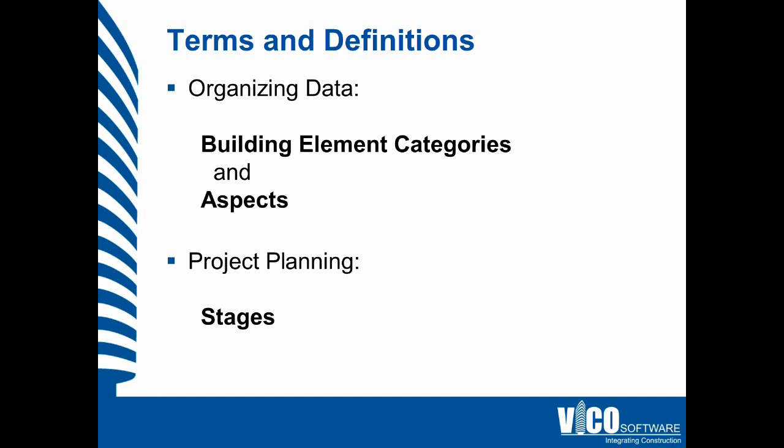Aspects are the things that we would like to include in our model. Aspects are the model, the cost, and the schedule information, but as mentioned earlier, could also include energy calculation information and things like that as well.